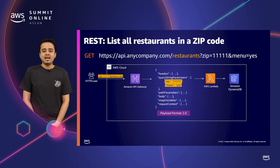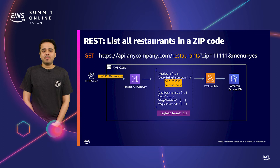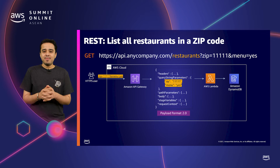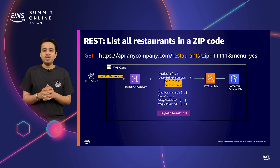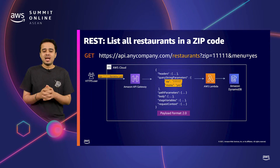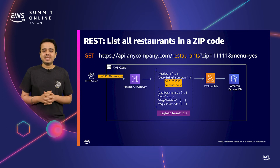When API Gateway receives a request with a path parameter slash restaurant and values in query parameters zip and menu, it constructs a standard payload format — currently called payload format version 2.0 — and passes that downstream to the Lambda function. The Lambda function then parses the input format, looks for the details it needs, and queries the backend database.